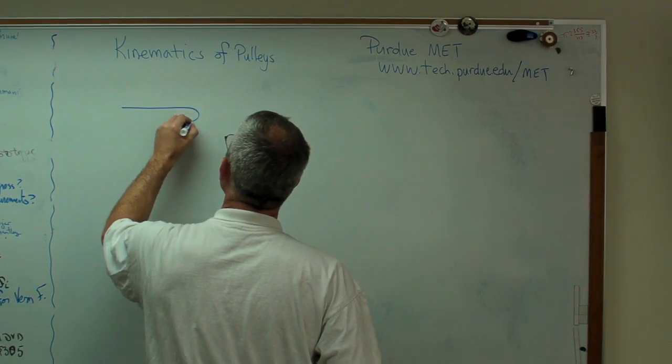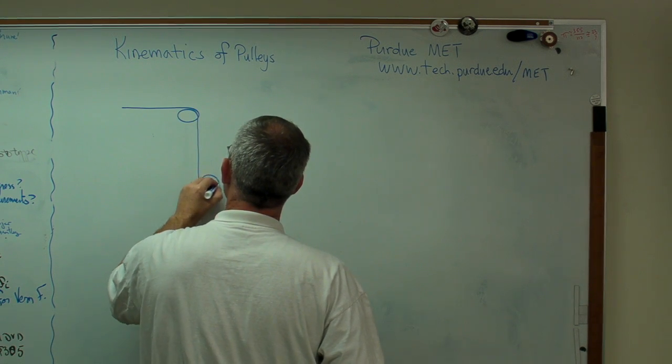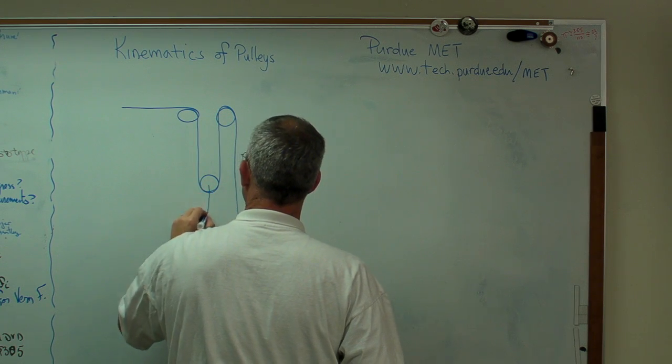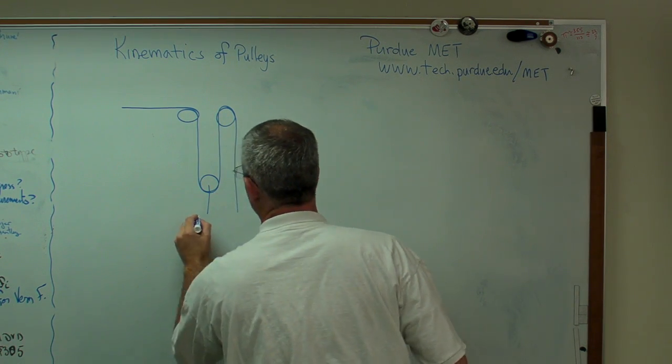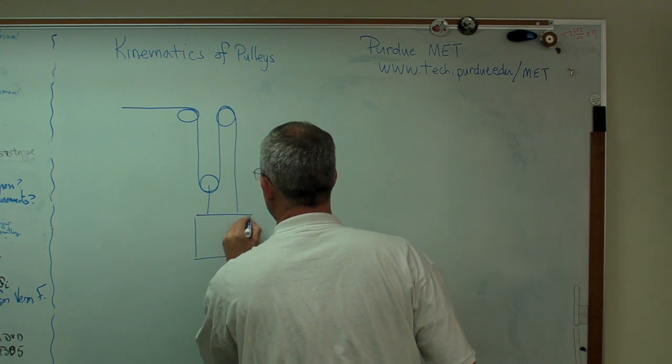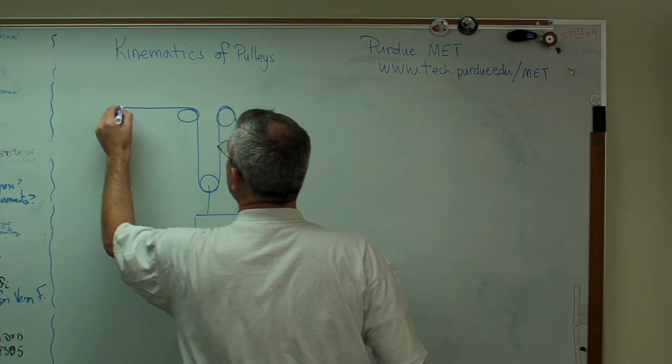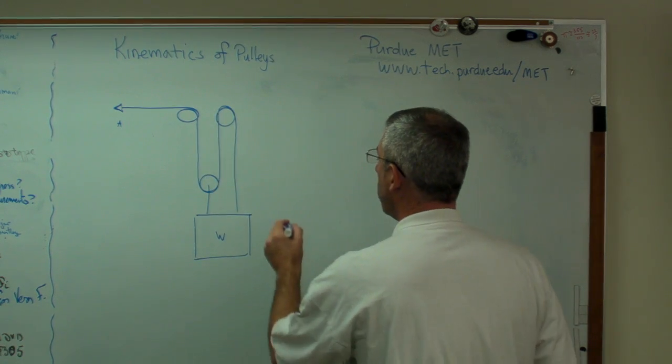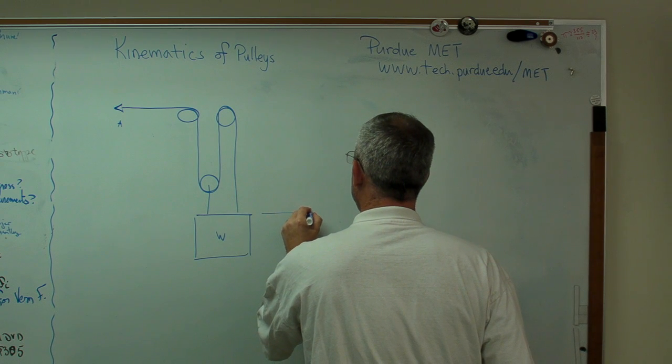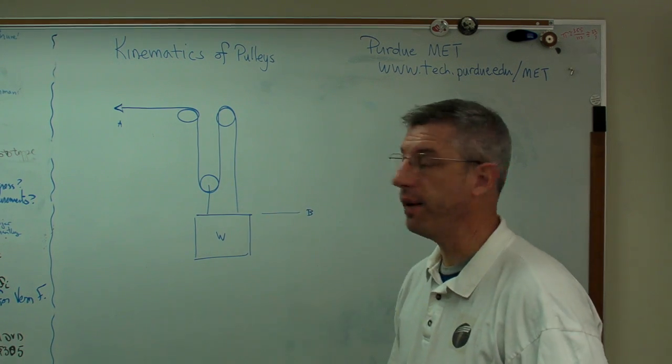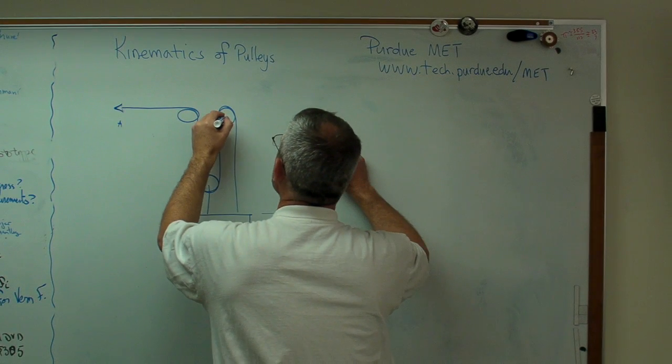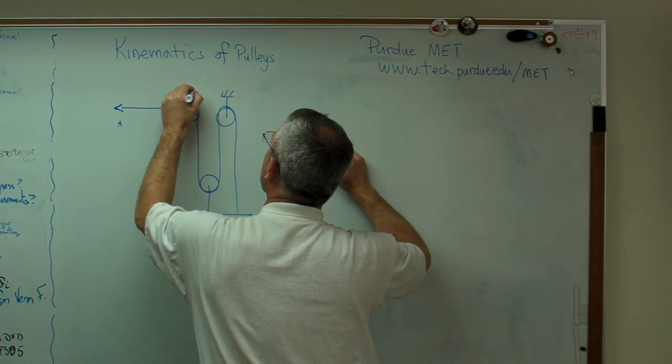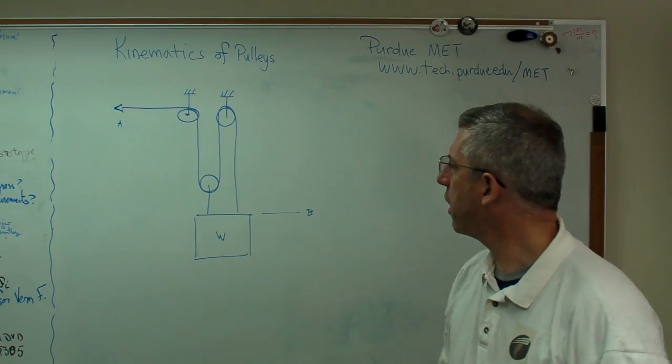Let's assume I've got a system that looks like this. And there's a weight. And there's the end of the rope. The end of the rope we'll call point A. And this point here we'll call point B. Let me draw where these pulleys are hooked on. Not the best drawing in the world, but I think it gets the job done.